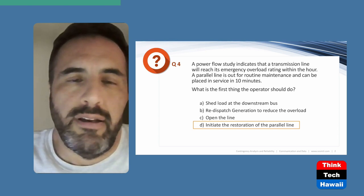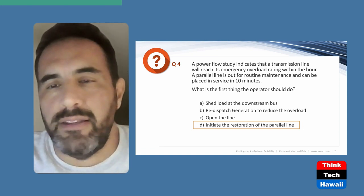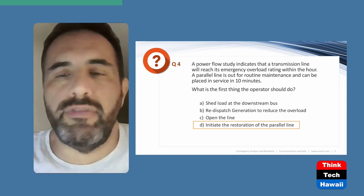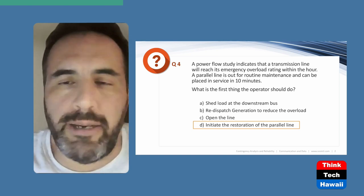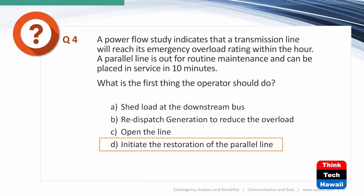If you show the parallel line back in service, the overload goes away, similar to what we discussed earlier. Since it takes 10 minutes to get this line back in service, by the time you get everybody mobilized — the clear-up time — they can get it back in 10 minutes. So you should have everybody prepared to put that line back in service. Let's talk about why A, B, and C are wrong and why D is the best answer.